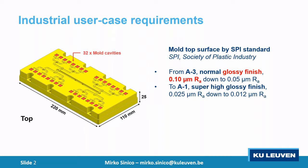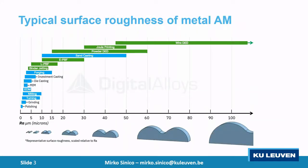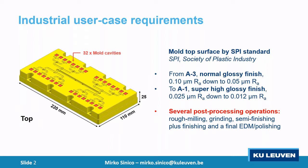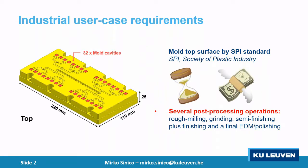This part is produced by Laser Powder Bed Fusion in maraging 300 material. Can we expect this kind of surface out of LPBF? Of course, the answer is no. Normally in Laser Powder Bed Fusion we are between 5 and 15–20 microns Ra for the surface. It's quite good compared to other metal AM processes, but still quite far from our target, which means we have to perform several post-processing operations — from rough milling all the way to final polishing.